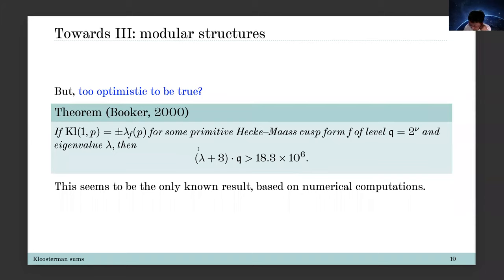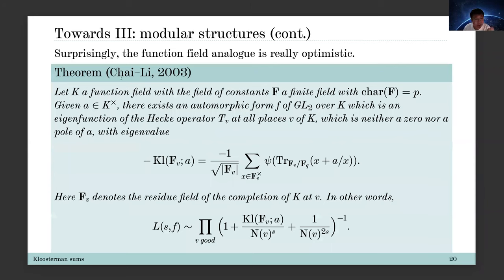In the function field analog, it was proved by Katz and Lee that you can really find a suitable automorphic form such that the eigenvalue can be given by a Kloosterman sum, but you have to put a negative sign. Using this modularity, they can prove the horizontal Sato-Tate distribution in the function field analog. So in function field settings the answer can be positive.